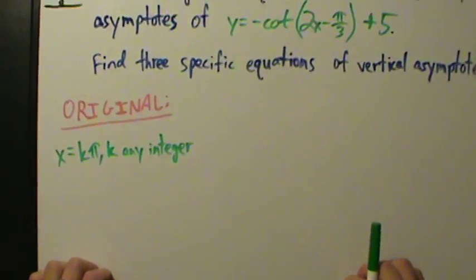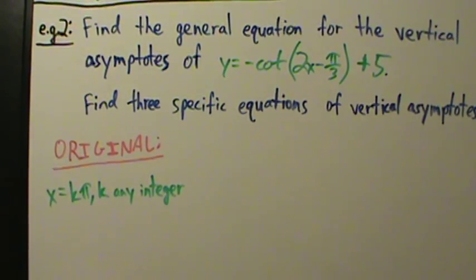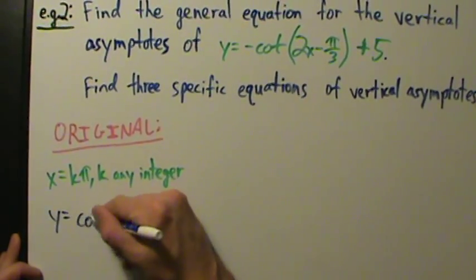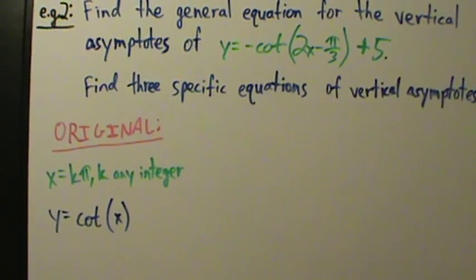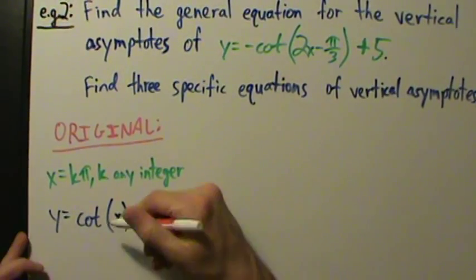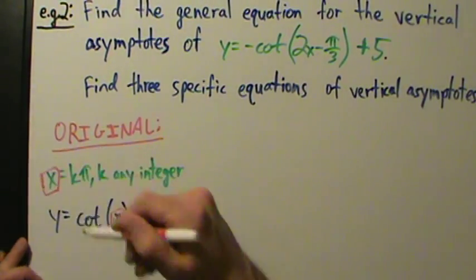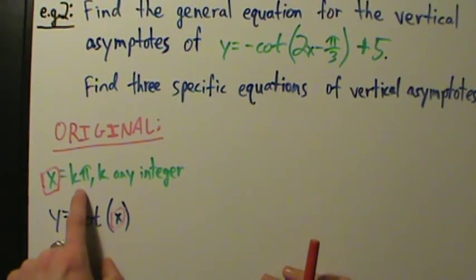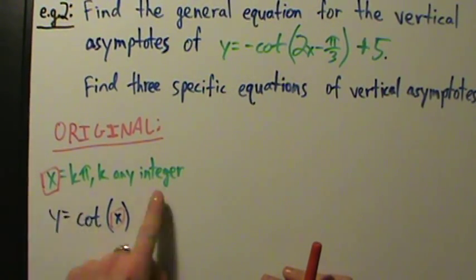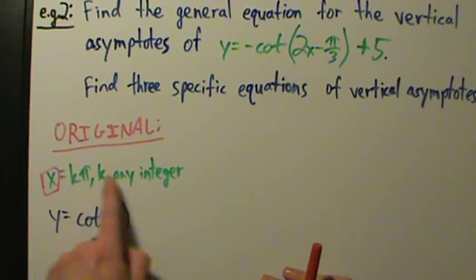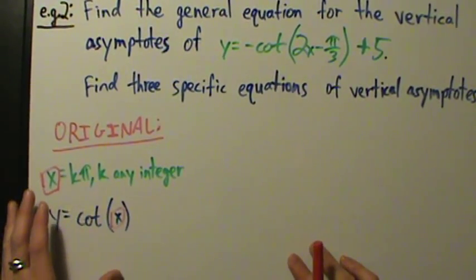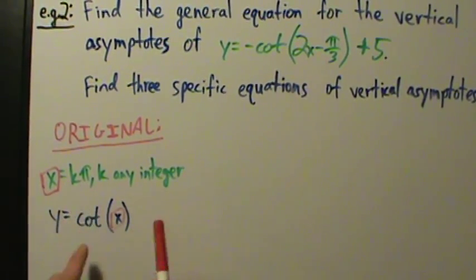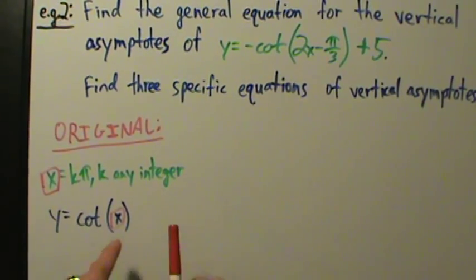Why is that? We talked about the cotangent properties in a separate video. For just the function y equals cotangent of x, for cotangent, whatever is inside of the trig function, you set that equal to k pi to find your vertical asymptotes. So for y equals cotangent of x, since x is inside, you set x equal to k pi.